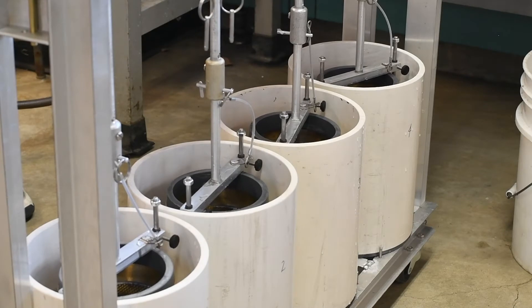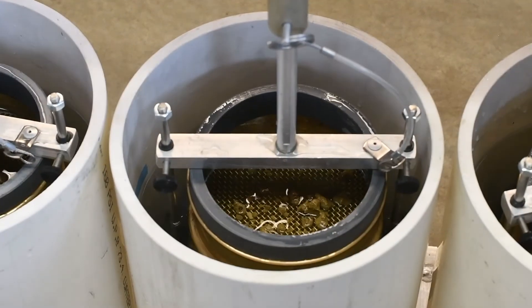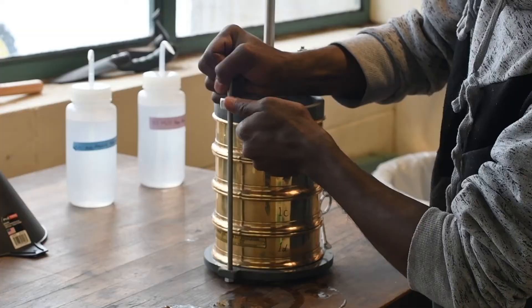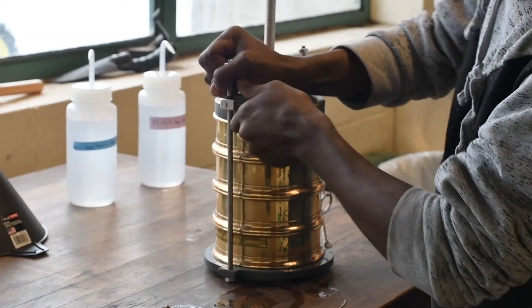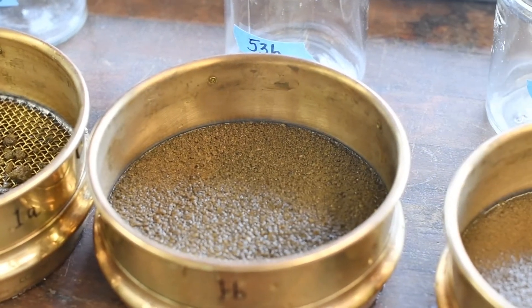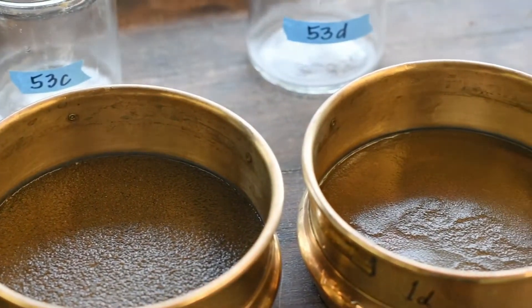This apparatus is called a modified yoder device. Our machine is set up to run four samples at a time. Each station consists of a drum filled with water and a stack of sieves. For our soils, we use four sieve sizes, which are sizes two millimeters, 500 microns, 250 microns, and 53 microns. You may decide to use more or fewer sieves or different size sieves depending on your soil.